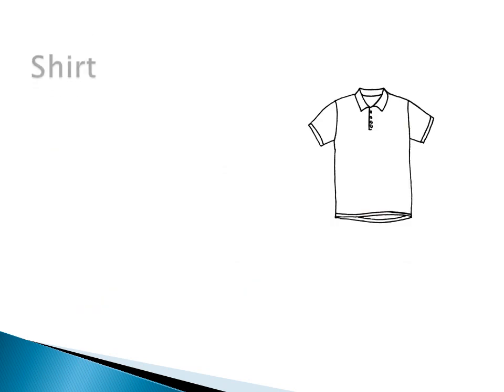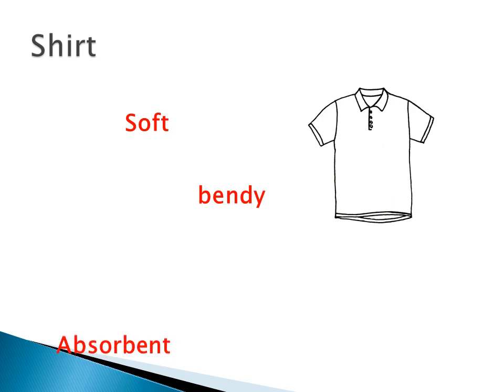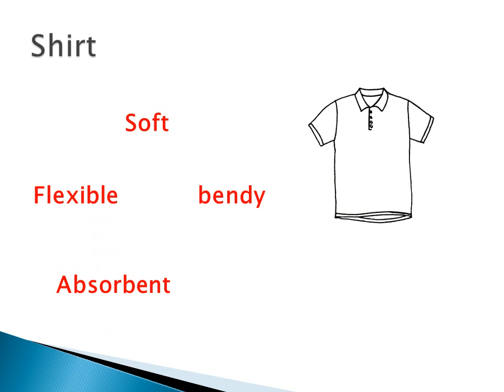This shirt also has several properties. It is a soft material. It is bendy because I can wear it and it can fit on my body. It is also absorbent — if someone spills water on me I will get wet. And it is flexible as well.